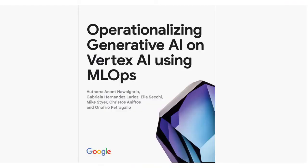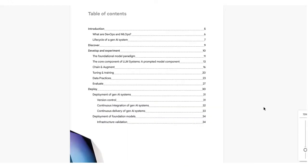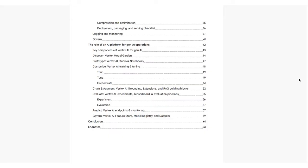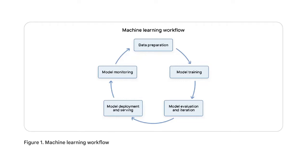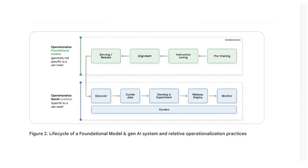Today's white paper, titled 'Operationalizing Generative AI on Vertex AI Using MLOps,' introduces us to the unique challenges and solutions in deploying generative AI systems. With the emergence of foundation models and generative AI, we now have a range of options for model architecture, tuning, data curation, and grounding outputs in real-world information. This white paper dives into handling these elements effectively using MLOps practices.